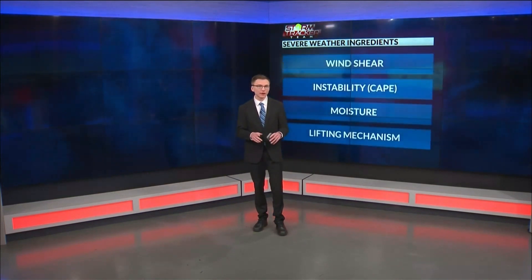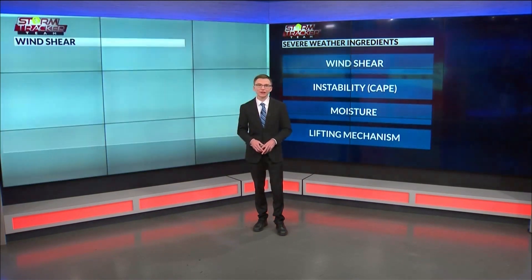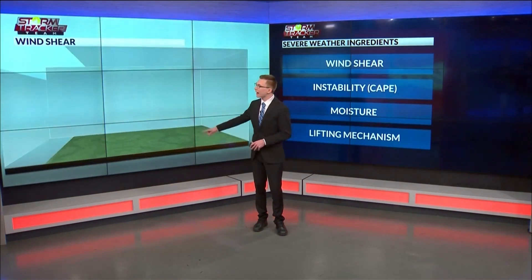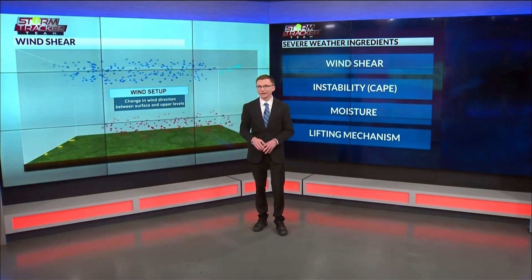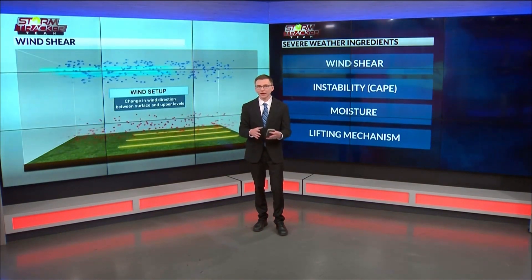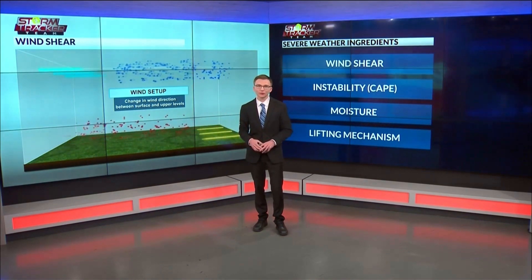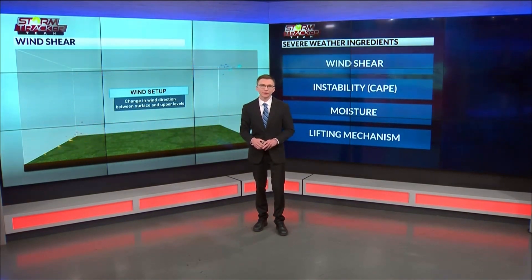When we forecast for severe weather, there are four main ingredients that we look for: shear, lift, instability, and moisture. Wind shear describes the change in wind speed and direction as you go higher into the atmosphere. These strong winds can tilt the storms, allowing them to maintain their strength longer and helping storms start to rotate.